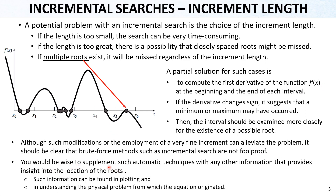You should be wise to supplement such automatic techniques with additional information that provides insight into the location of the roots. Instead of simply using the method, you can add additional conditions or checks — such as plotting each iteration on the function to see where it goes, checking the function value by substituting the estimate and seeing if it is close to zero, or understanding the physical problem and the physics of the function.